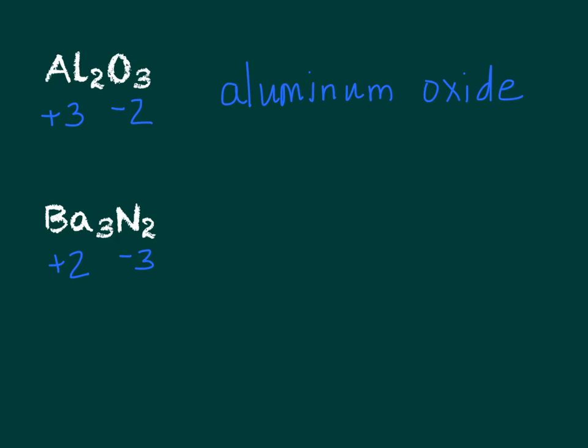Again, we're just naming the ions. So Ba is barium, and because it has a positive charge, we don't change the name. And N, with a minus three charge, is nitride. We change the ending from nitrogen to -ide. So barium nitride is the name of the compound.